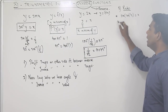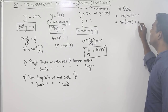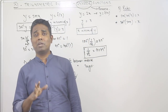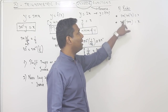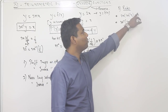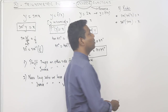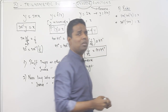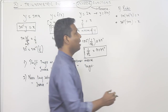This is important. Whether the trig comes first or the inverse comes first — sin inverse of sin x equals x as well — the final answer is always x. This is applicable for all ratios: cos inverse, tan inverse, sec inverse, cot inverse, and cosec inverse.